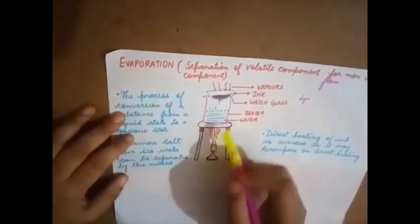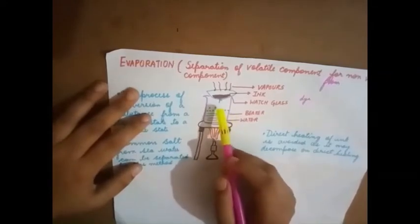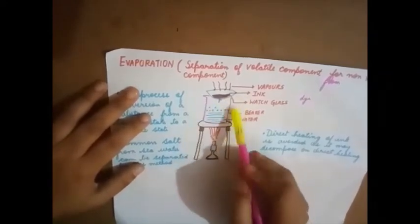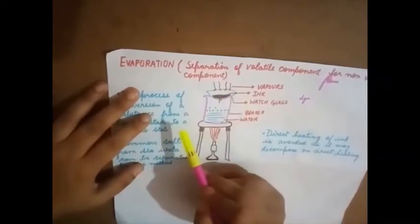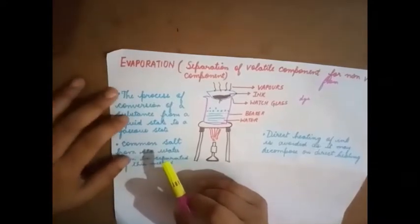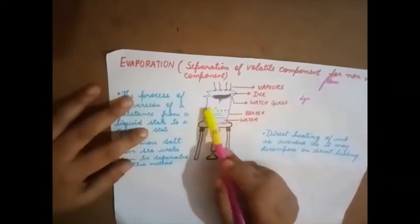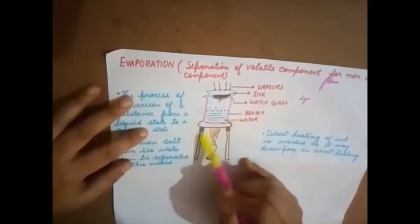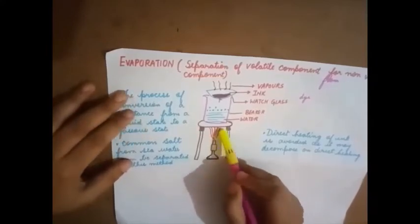Now look at this particular experiment. For this experiment, we need a beaker filled with water and a watch glass. Watch glass is an apparatus onto which a substance is kept. Here we are placing ink. This whole setup is placed on a stand and there is a burner which supplies heat.